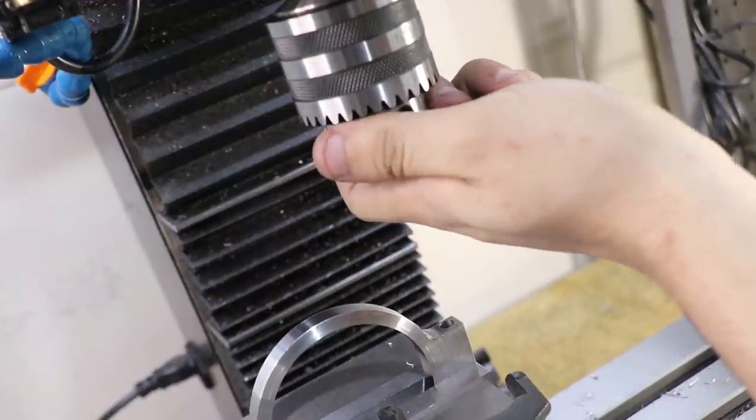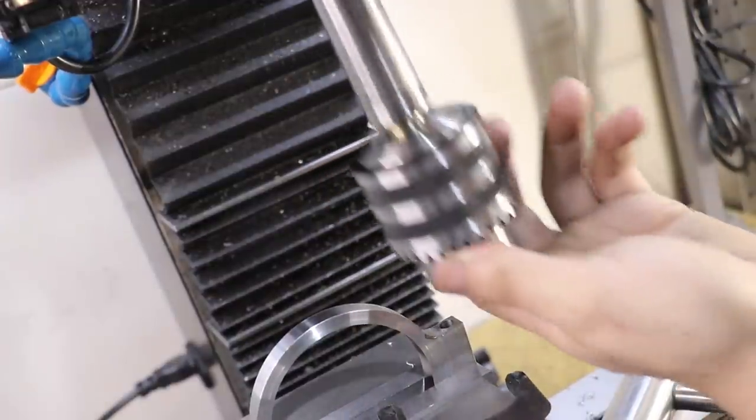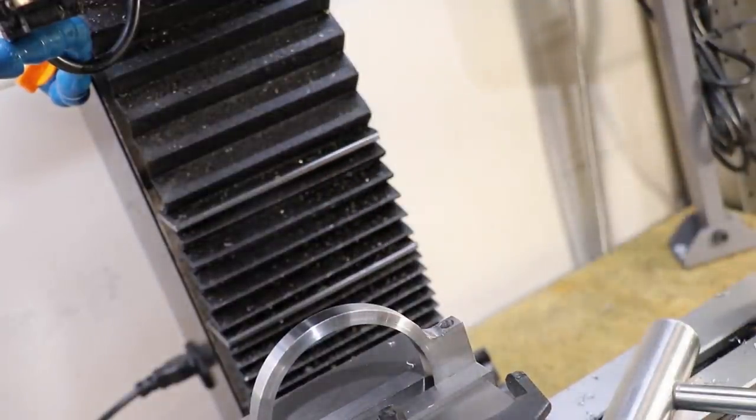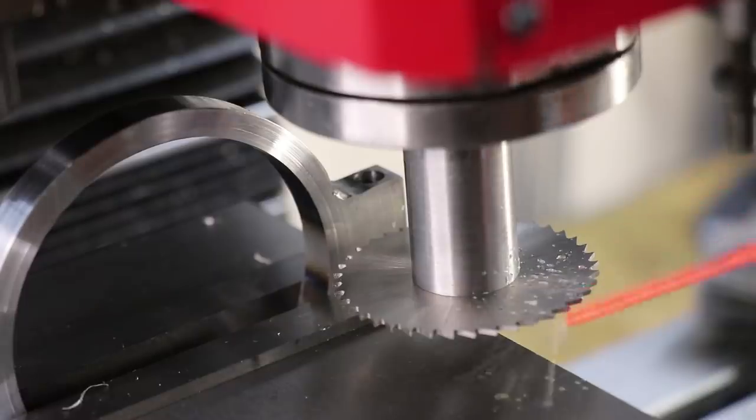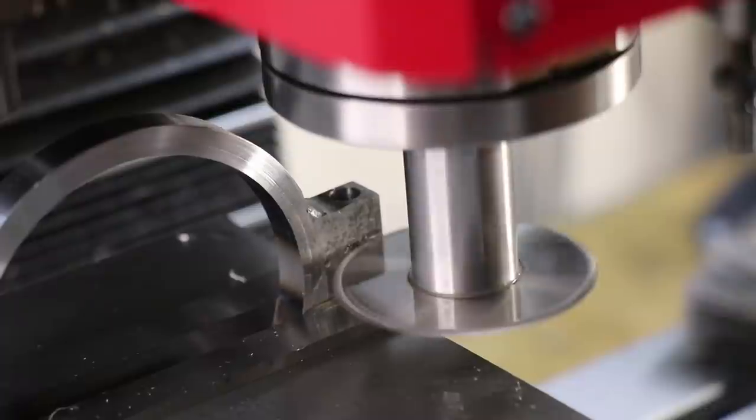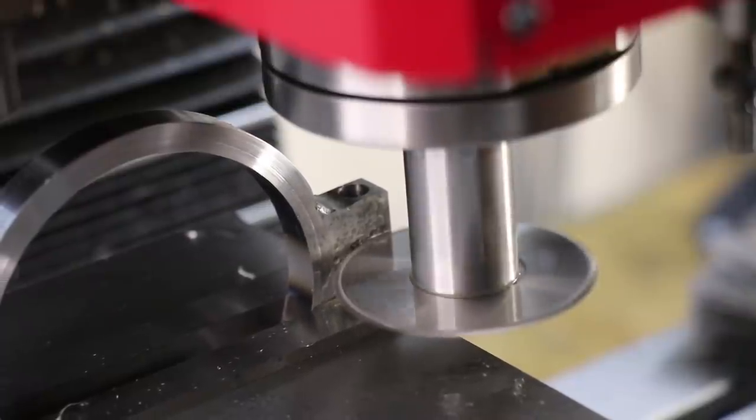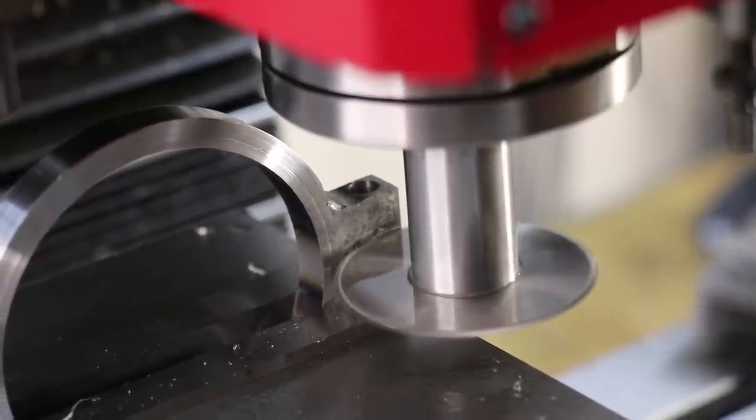The next thing I'll do will be to cut out a four millimeter section using the slitting saw. The slitting saw that I'm using here is a little bit blunt, so I'll take multiple shallow passes rather than the one deep pass that I normally do.